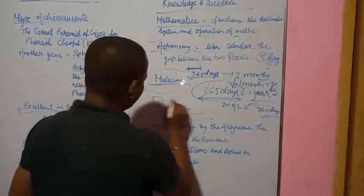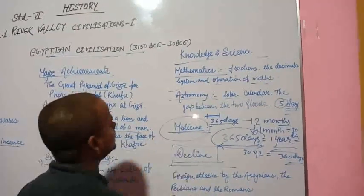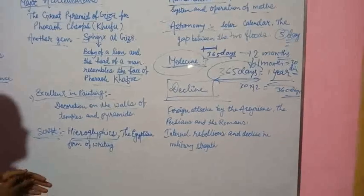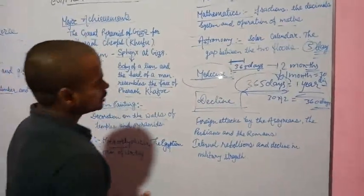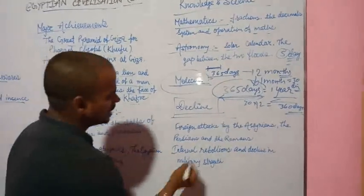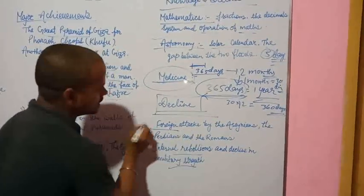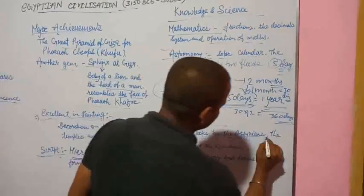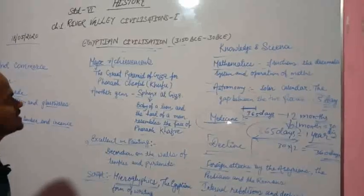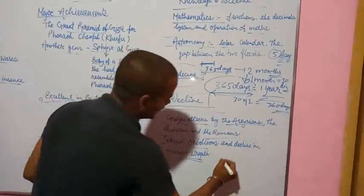Egyptian civilization lasted a long time from 3150 BCE to 30 BCE. The civilization declined due to internal rebellion, weakened military strength and foreign attacks by Persians and Romans. The civilization eventually vanished.